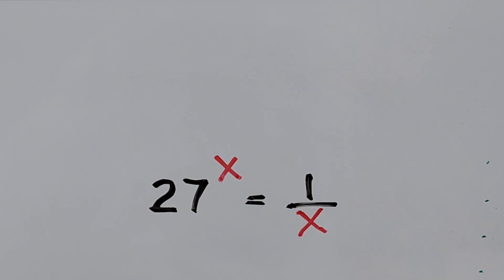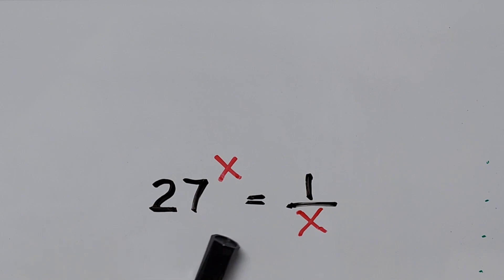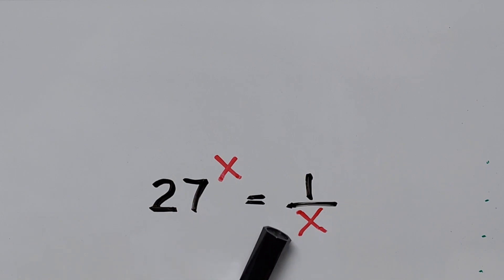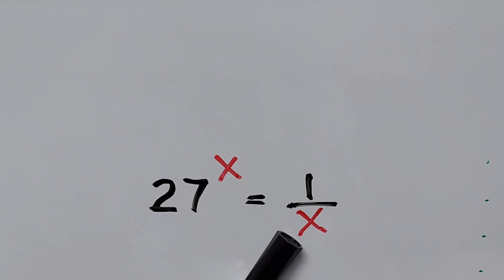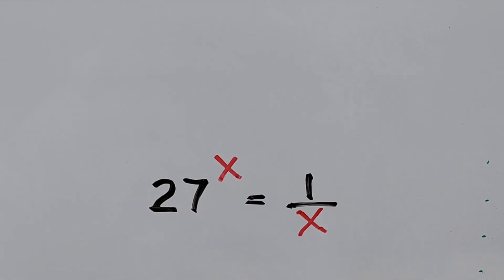Hello everyone, we have your exponential equation: 27 to the power of x equals 1 divided by x. In this video, we'll be solving for the value of x. So what do you think would be the best way to solve this equation?